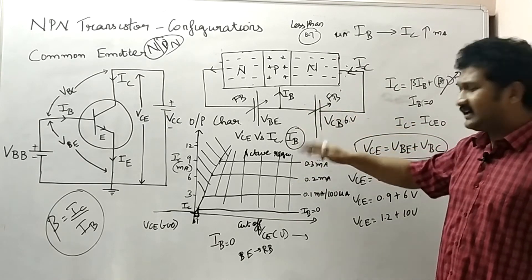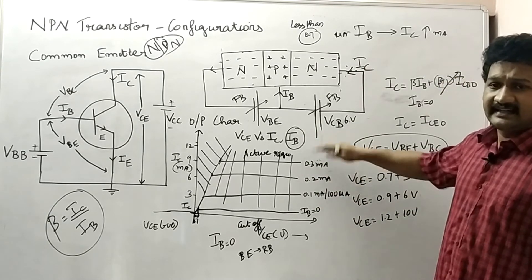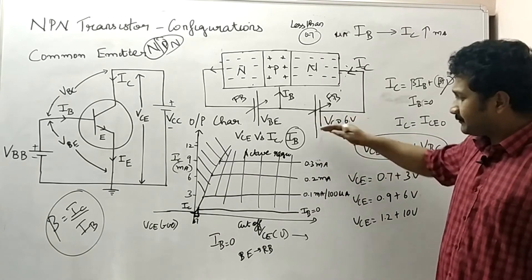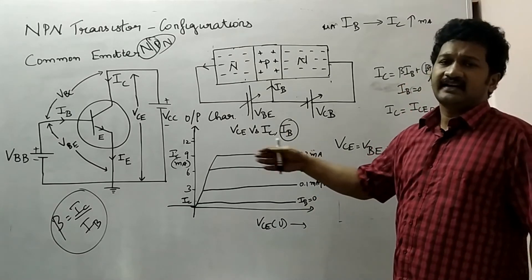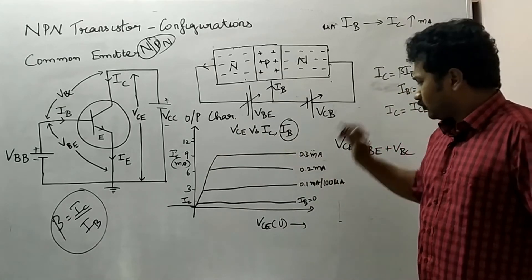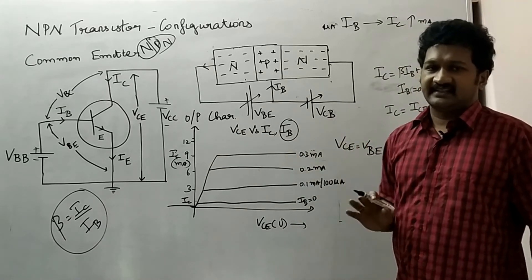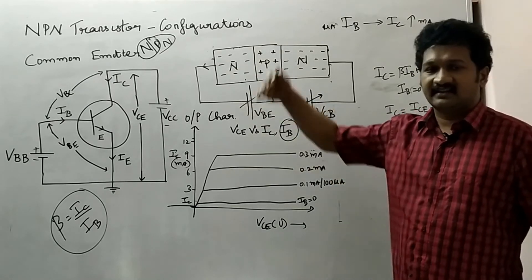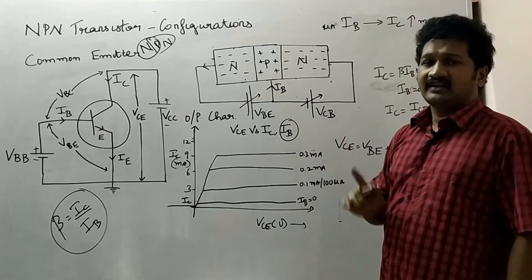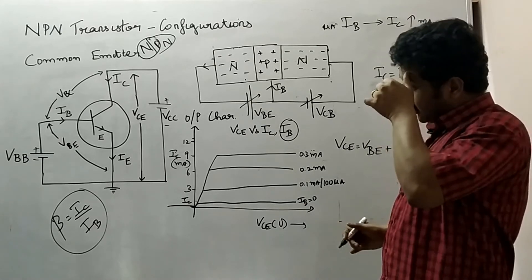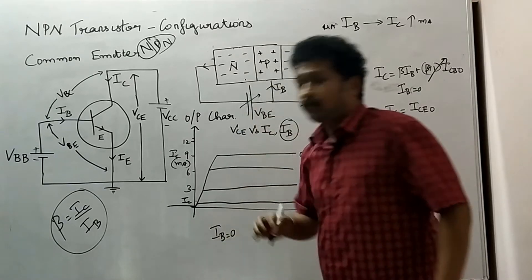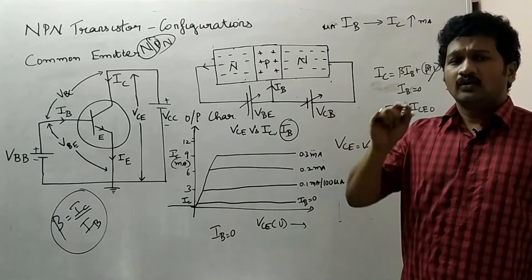By this principle we understand how collector current increases by setting base current at each level in a step-by-step manner. Now we are going to study the various regions and how the characteristic curve is obtained. There are three main modes or regions. The first is the cutoff mode or cutoff region, where IB is zero or both junctions are reverse biased.